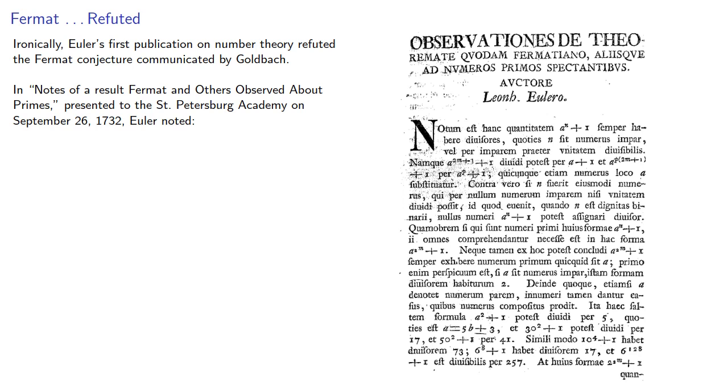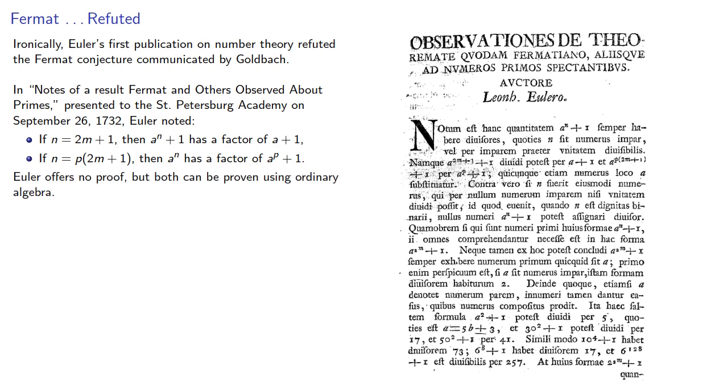If n is 2m plus 1, then a to the n plus 1 has a factor of a plus 1, and if n is some number times 2m plus 1, then a to the n has a factor of a to the p plus 1. Euler offered no proof, but both can be proven using ordinary algebra.